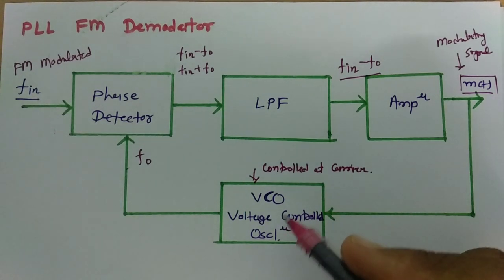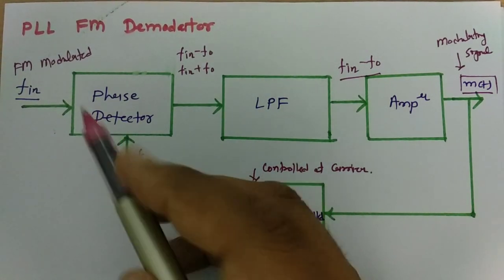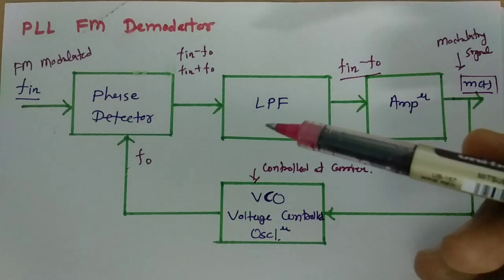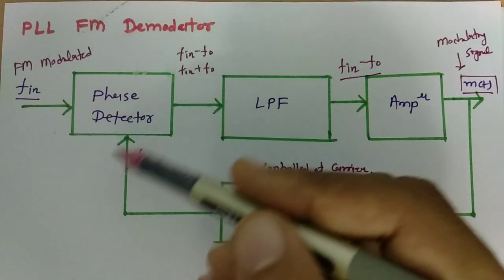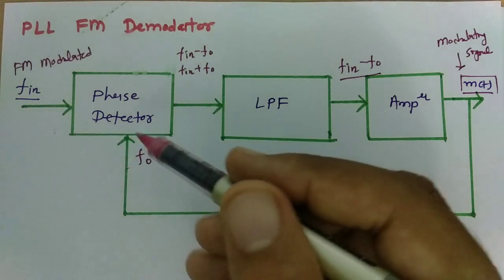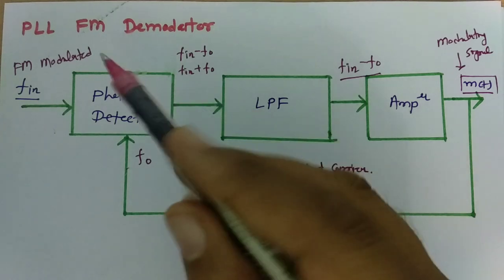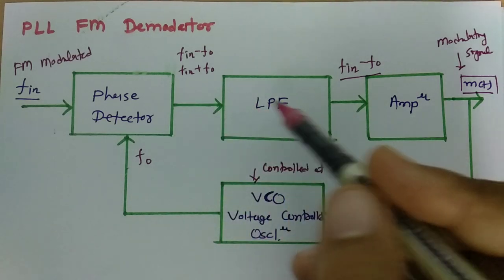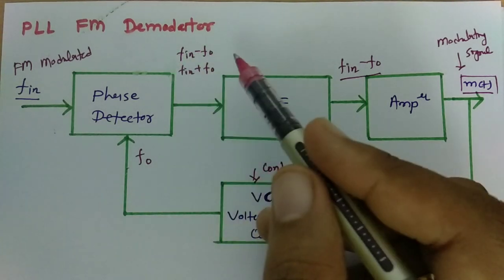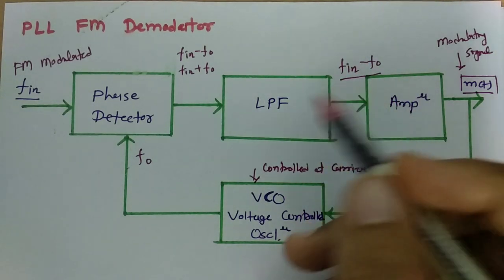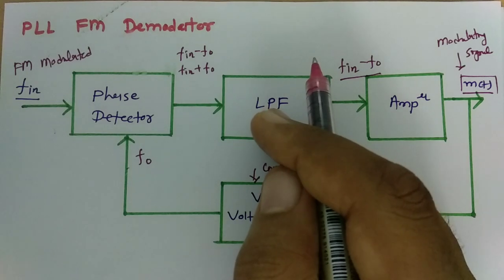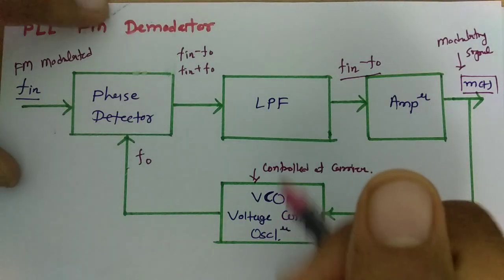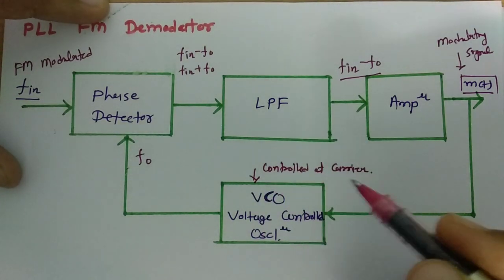The VCO is controlled at carrier frequency, and its output is given to the phase detector. The phase detector output, similar to a multiplier, generates two components: F_in minus F0 and F_in plus F0. Passing through the low pass filter gives the lower frequency component F_in minus F0, which carries the modulating signal.